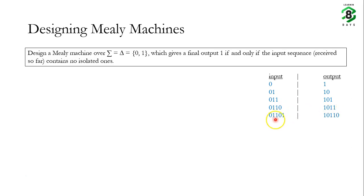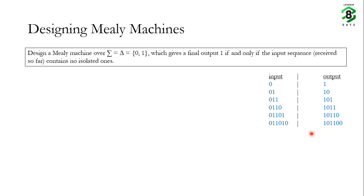If the input is 0 1 1 0 1, the corresponding output will be 1 0 1 1 0. And if the input is 0 1 1 0 1 0, the corresponding output will be 1 0 1 1 0 0. So we are building a machine that produces output 1 when the input sequence contains no isolated ones, and output 0 otherwise.